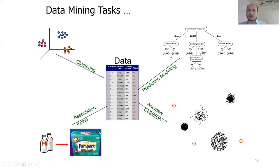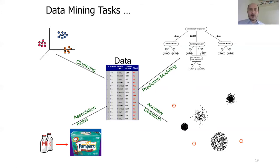Today we'll concentrate on predictive modeling. Another technique is clustering — finding similar data and putting them into the same clusters. An important area is finding association rules between items, like milk and diapers. Finally, outlier detection is another task, and outliers can be really important in areas like medical decision making.